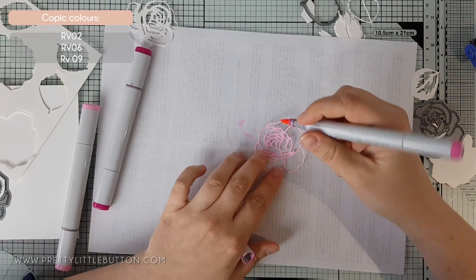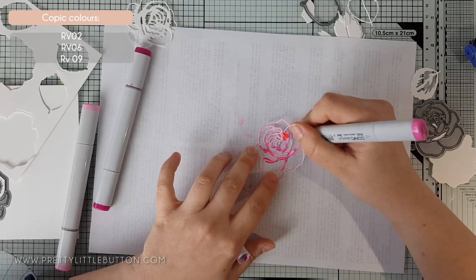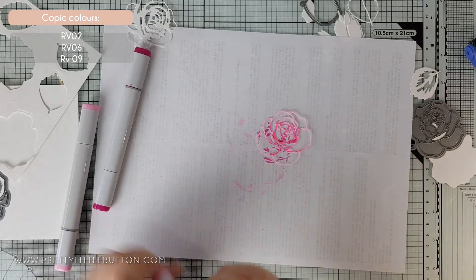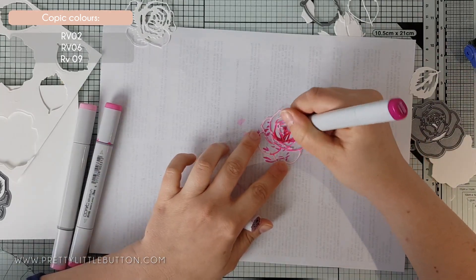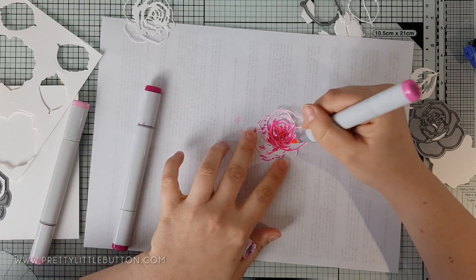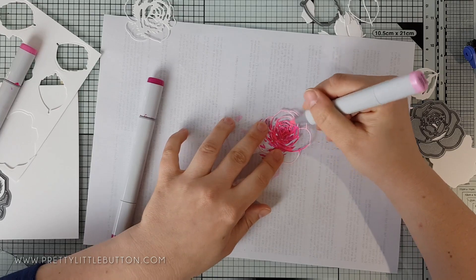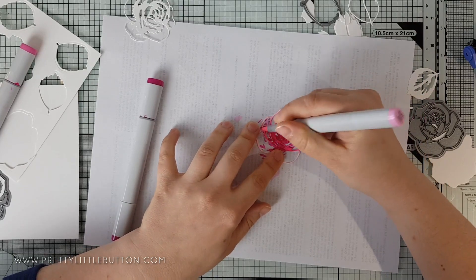Start off by adding a layer of your lightest color, so I used RV02. Next, add your midtone color, which I used was RV06, and add this to the middle of the die cut, feathering your strokes outwards. Lastly, add your darkest tone—I used RV09—in the middle and only feather this out slightly.